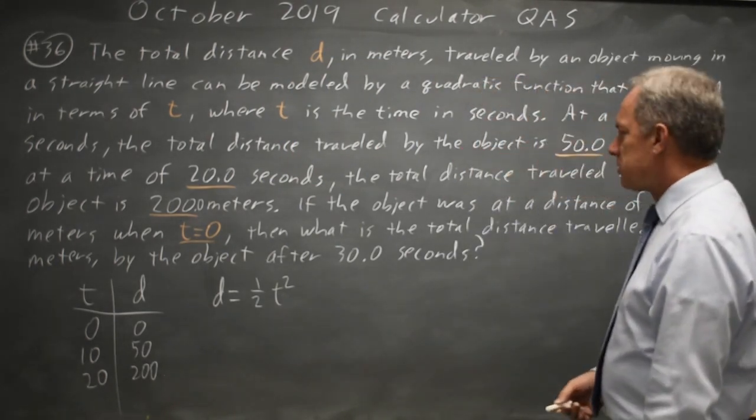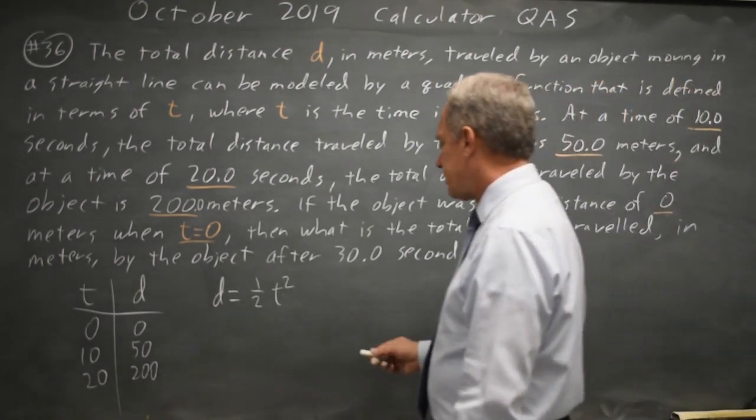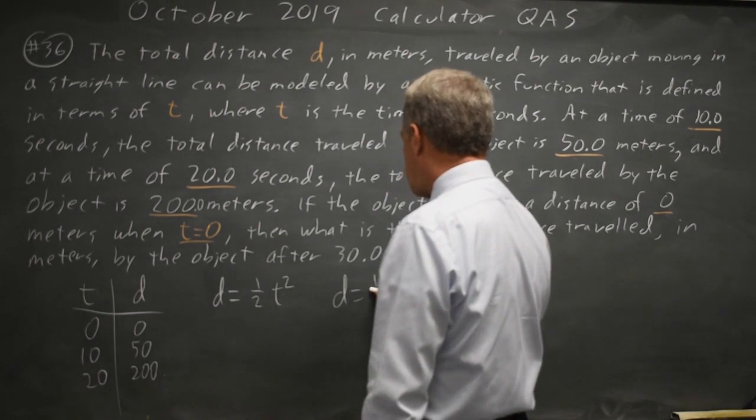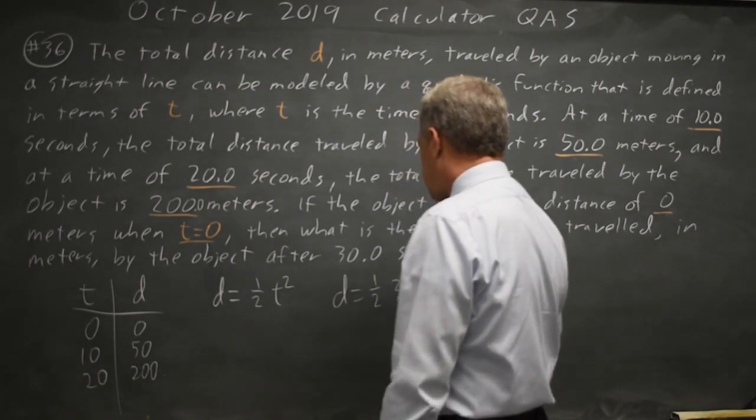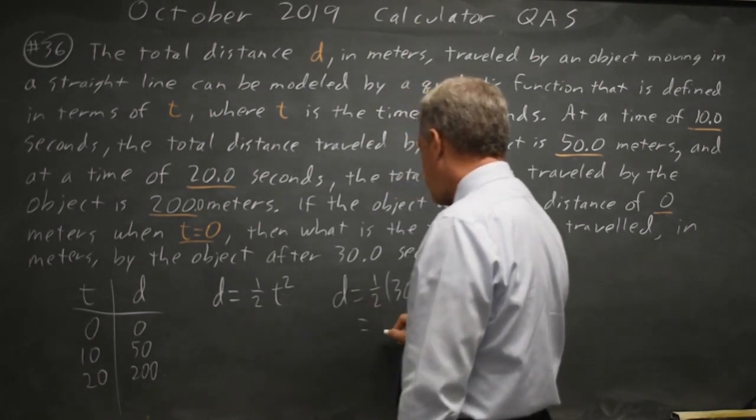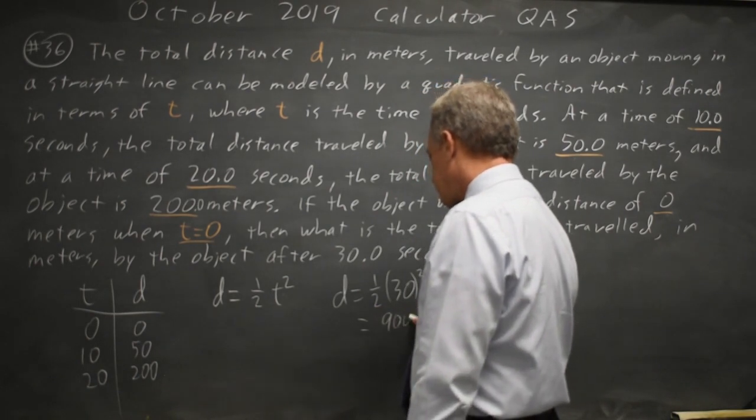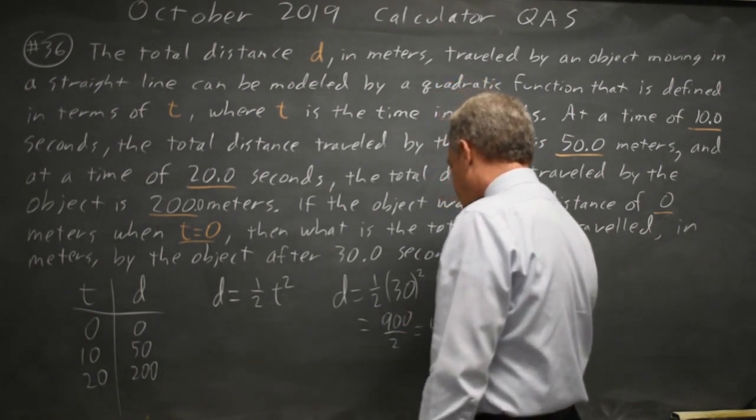Now let's check what their question was. What's the distance traveled after 30 seconds? Distance is 1 half 30 squared, which is 1 half of 900 is 450.